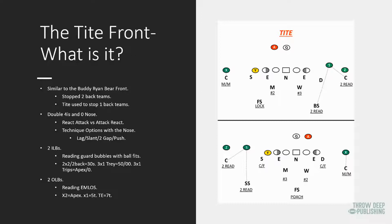Our outside linebackers are going to be end man on the line of scrimmage. For our drop, this is going to be this tackle. For our Sam linebacker, that's going to be this tight end — end man on the line of scrimmage to the near back. That could be an H or it could be an F. Sometimes it could be the quarterback or the R.